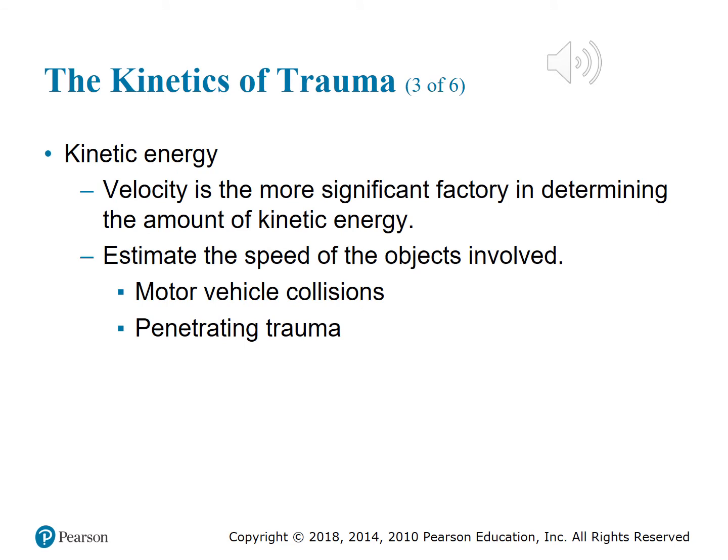There are really two types of trauma: blunt trauma and penetrating trauma. Both involve kinetic energy — energy contained inside a moving body. With a gunshot wound, the bullet may have low mass but very high velocity. When it hits the skin, all that kinetic energy is concentrated in a very small surface area, causing it to penetrate the body.